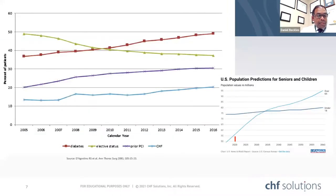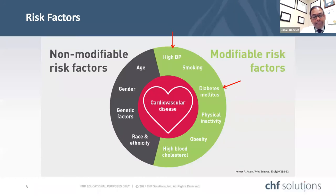With the predicted increase in the aging U.S. population, current trends show a decreasing number of elective cases, an increase in the number of diabetics in up to 50% of cases operated on, prior PCI in 30% of cases, and a diagnosis of heart failure in 20%.